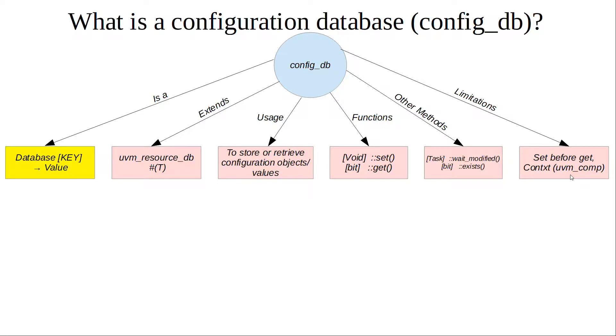To summarize, config DB is used mainly to pass configuration objects and values between uvm components all over the testbench. Visualize it as an internal database with a hierarchical key or hierarchical field name, and the corresponding value or handle of an object. As long as you understand that, it should be enough to answer any interviewer's question for someone who's a recent college graduate.